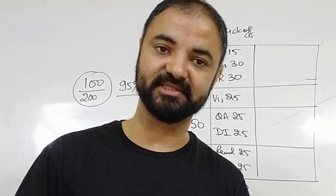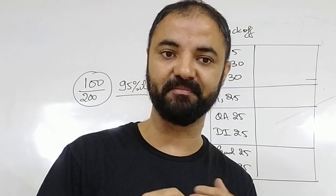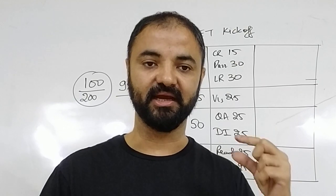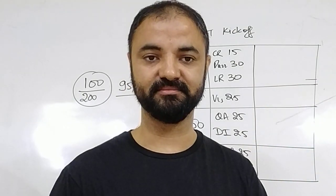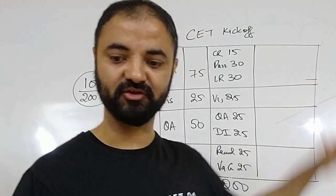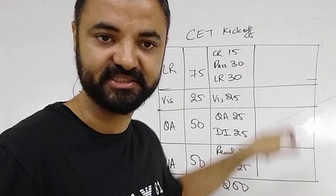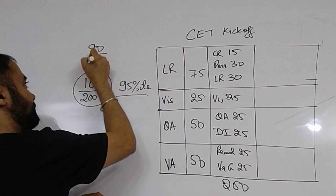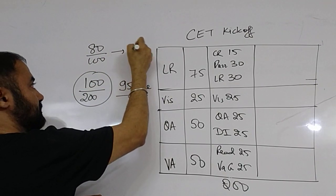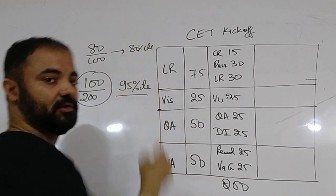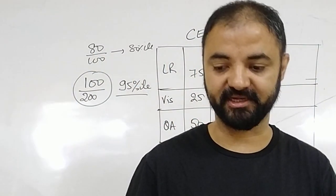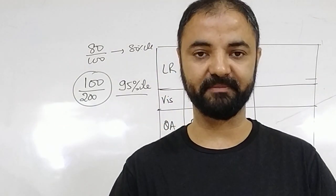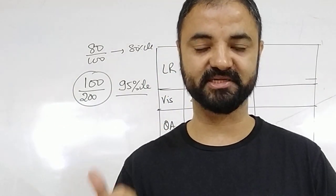Your friend or you yourself gave CET last year, so you understand the paper — you can't complete the paper, the paper will leave you. So if I break it up into sections, I am able to perform in every section. That is your first target: get 10 marks in each section — 10-10-10-10 across all of them. You are scoring 80 marks, 80 percentile. Then we'll move the target to 90 percentile, which is 100 marks.